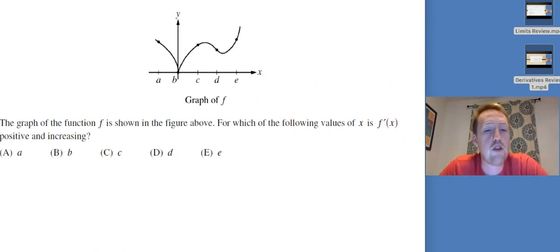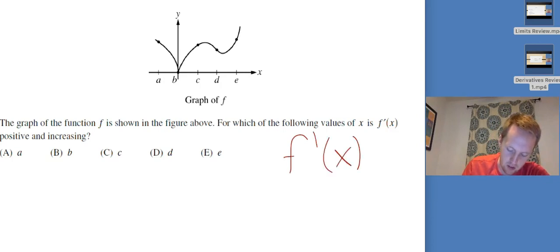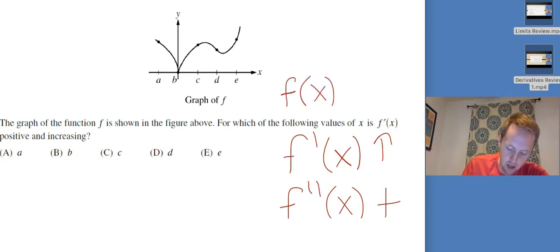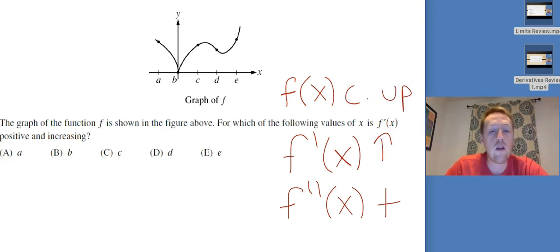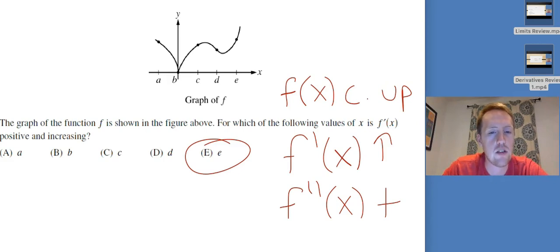The graph of f is shown. For which values of x is f prime positive and increasing? f prime positive is easy — I just need spots where f is increasing. But f prime increasing means f double prime is positive, which means f is concave up. So I'm looking for a point where the function is both concave up and increasing. There's only one point among the given answer choices where it's both concave up and increasing — that's the answer.